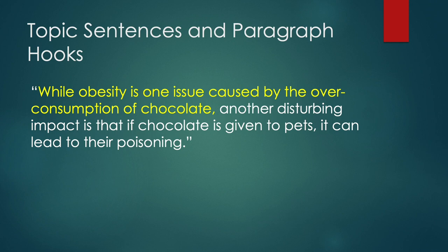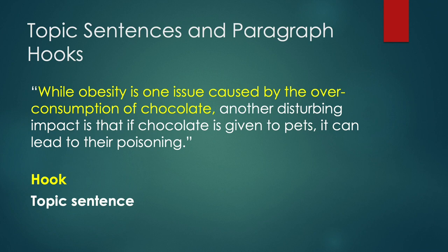While obesity is one issue caused by the overconsumption of chocolate, another disturbing impact is that if chocolate is given to pets, it can lead to their poisoning. This sentence starts with a paragraph hook, coloured yellow, and then it has the topic sentence in white. The paragraph hook links back to the previous paragraph — you can see it talks about the problem of obesity. And this paragraph is about another problem: the dangers to pets if they eat chocolate.